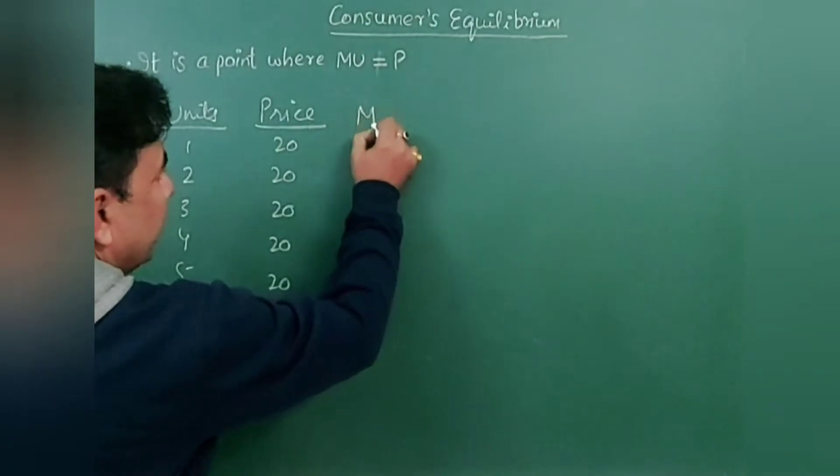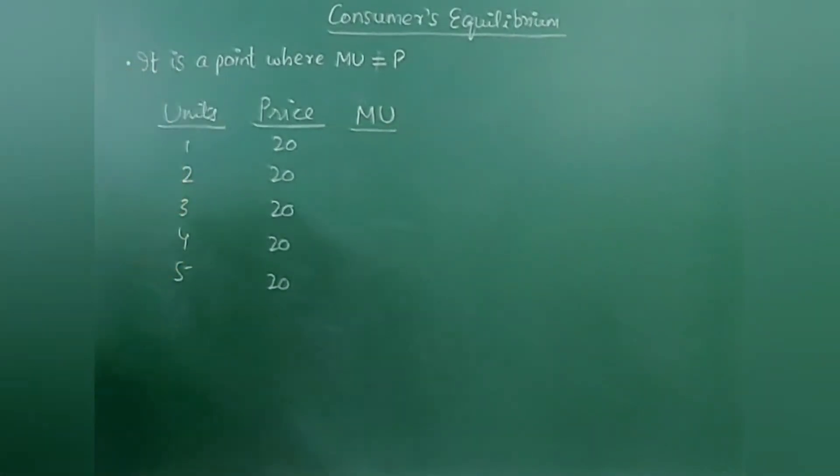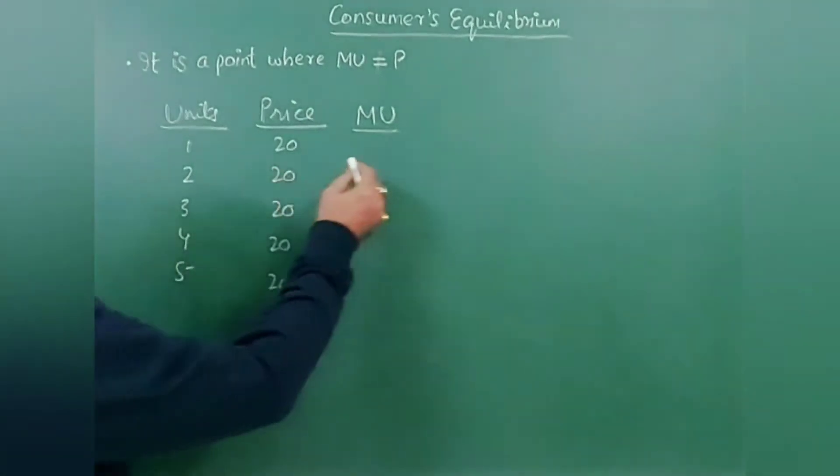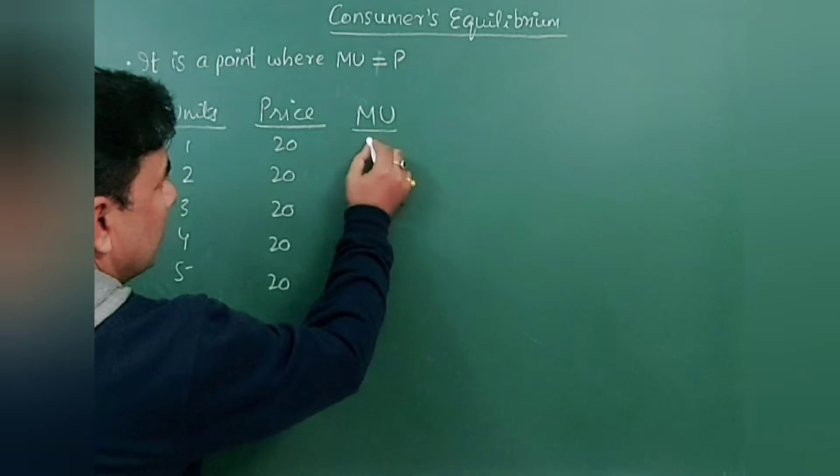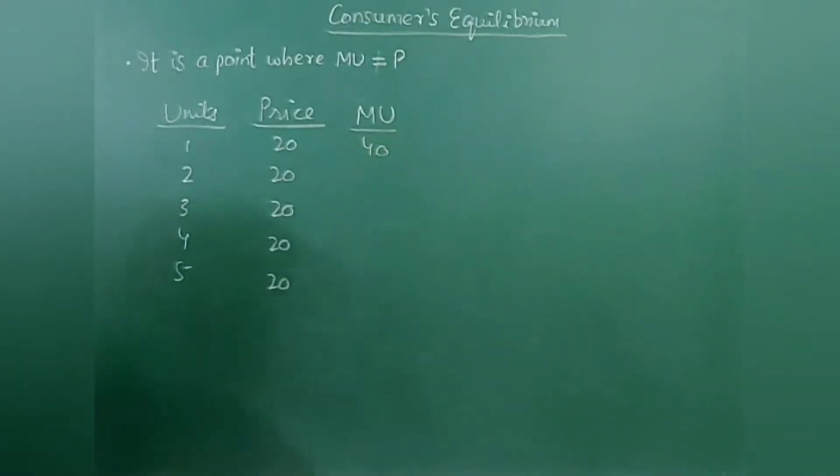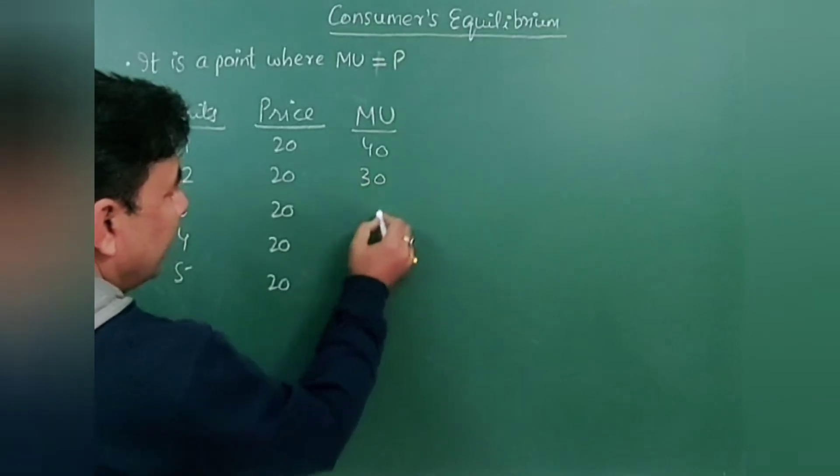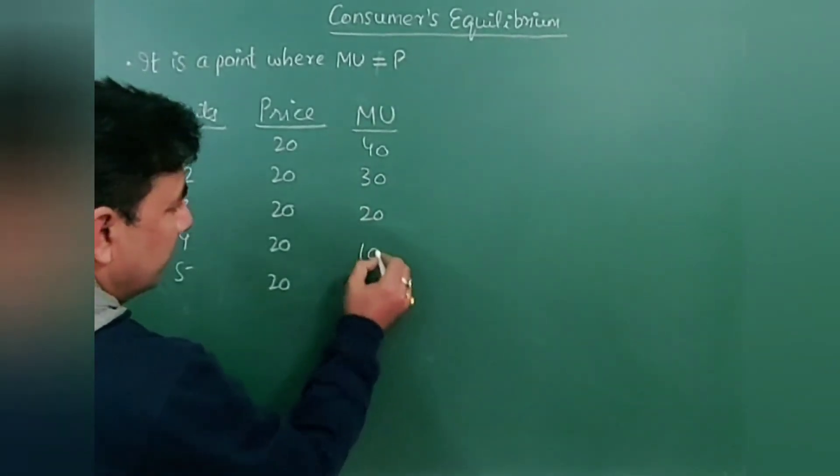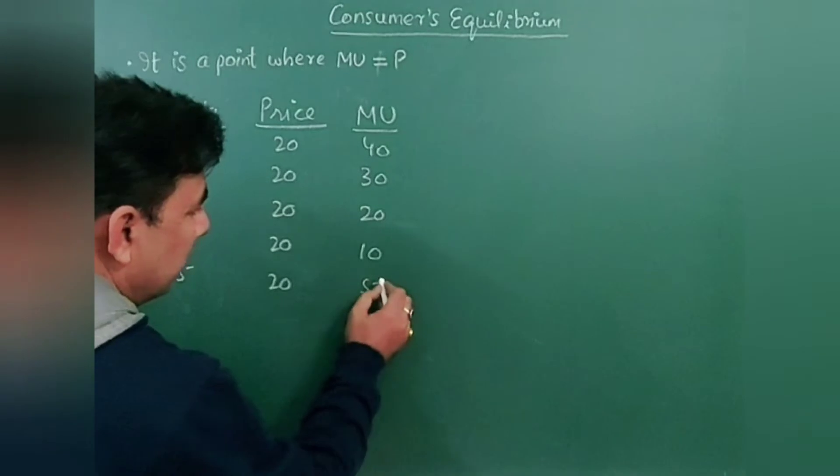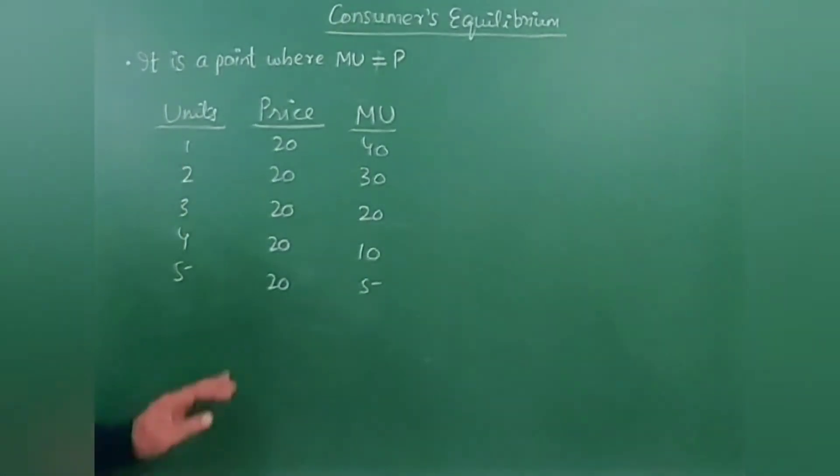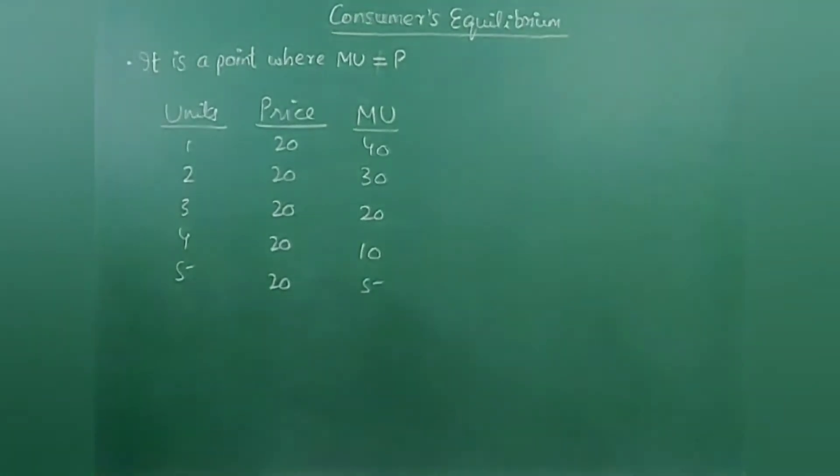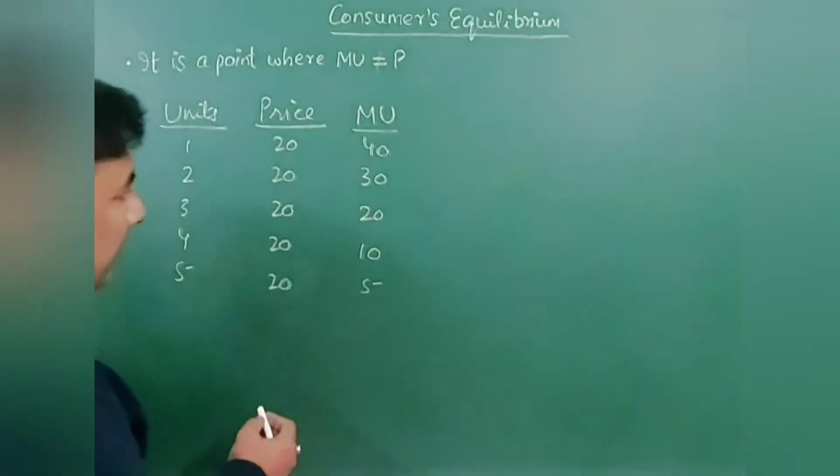So units, price, and marginal utility. Now for example, first unit say 40 marginal utility, then we get suppose 30, then 20, and then 10, and say 5. So this is how the schedule looks like.